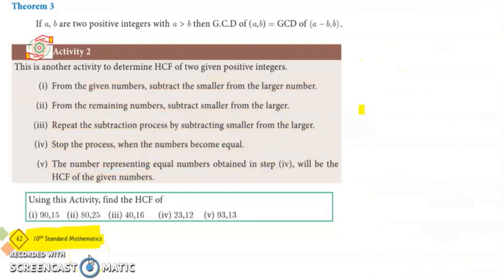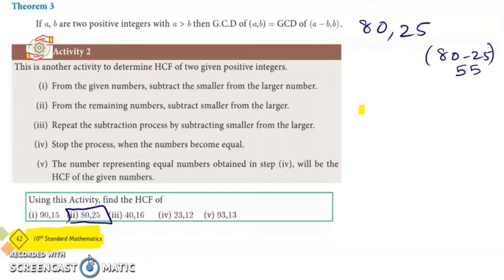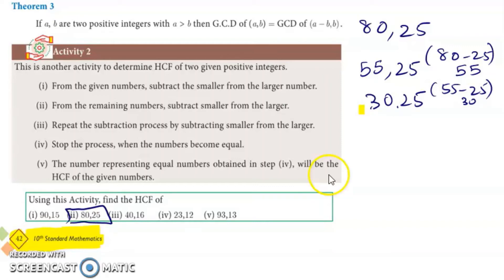Let's repeat the same process for two new numbers: 80 and 25. So 80 minus 25 gives us 55. We write 55 and 25. Repeat the same process: 55 minus 25 gives 30. So we have 30 and 25. Repeat again: 30 minus 25 gives 5. So we have 5 and 25.